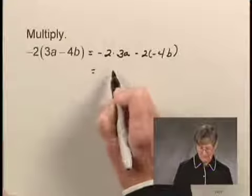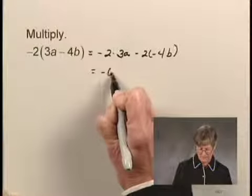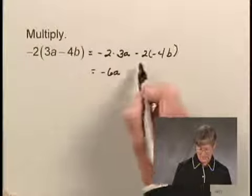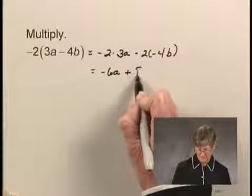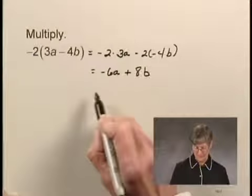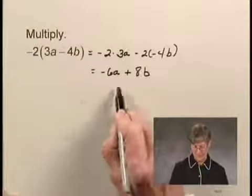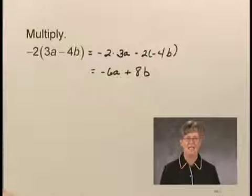Negative 2 times 3a gives us negative 6a, and when I do this product, I get 8b, so the product is equivalent to negative 6a plus 8b.